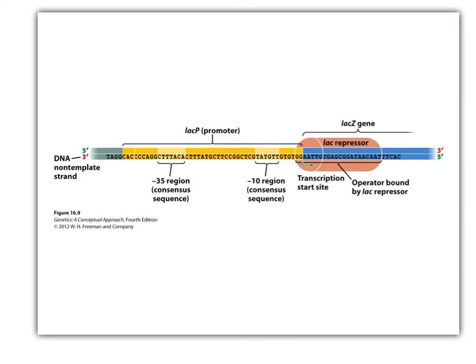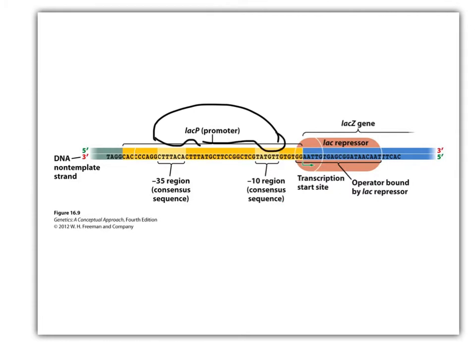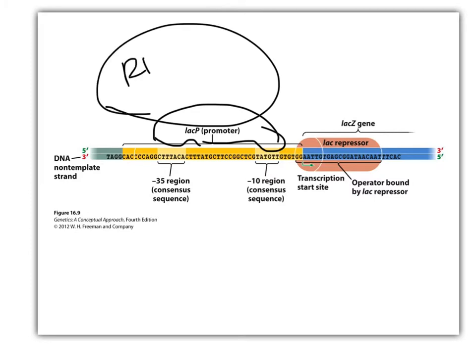Here is a close-up of just the beginning of the lac operon: lac p (the promoter), the operator sequence, and then the lac z gene. Looking at the actual sequence, recall from the lecture on initiation: the sigma factor recognizes the promoter at the minus 10 and minus 35 regions and brings in RNA polymerase.